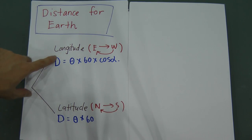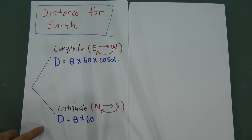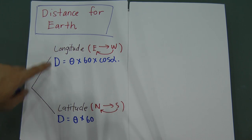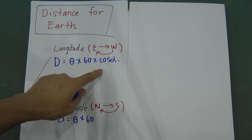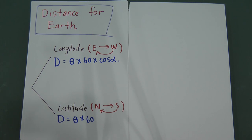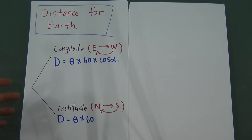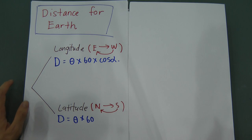So the difference between longitude and latitude is that for longitude you have to multiply by cos alpha. But most of you are very confused about where you get alpha. So I'll give an example for longitude.